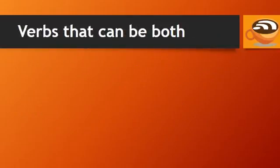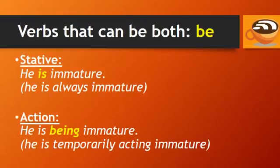Some verbs can be both action verbs and stative verbs, depending on their meaning and context. For example, the verb 'be.' If you say, 'He is immature,' 'be' is a stative verb, meaning he is always immature. But if you say, 'He is being immature,' then 'be' is an action verb, meaning he is temporarily acting immature.